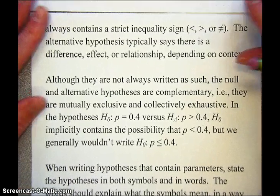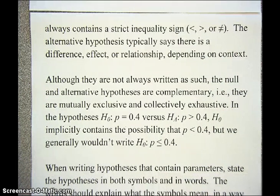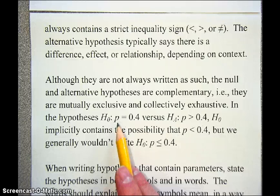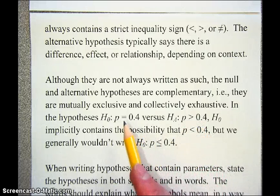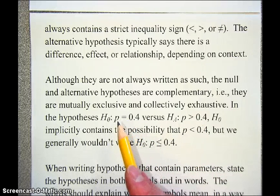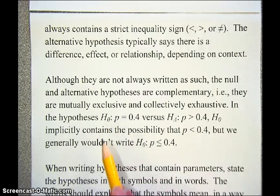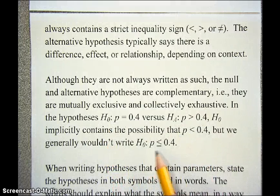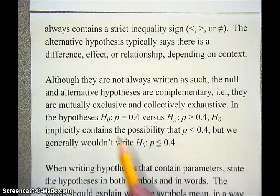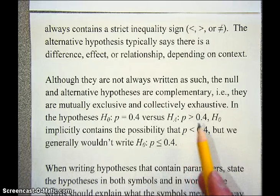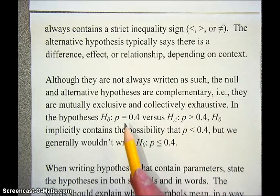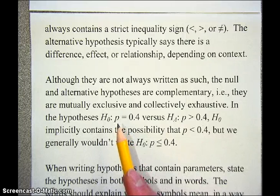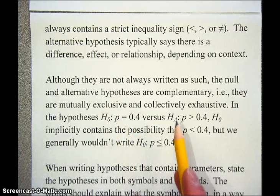The null hypothesis and the alternative hypothesis are complementary to each other — they're mutually exclusive and collectively exhaustive, and should exhaust all possibilities. For example, H₀: P = 0.4 versus the alternative that P > 0.4. We're leaving out all the possibilities that P < 0.4, but H₀ implicitly contains that possibility. We generally don't write this; we give a specific value for the null and a vague general value for the alternative. If the alternative is one-sided, pointing in one direction, the null hypothesis implicitly includes all the other possibilities on the other side of that value.